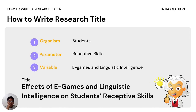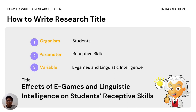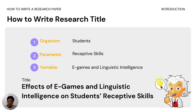Here is an example. When you write your research title, identify these three things first. Your organism — for example, students. The parameter — the receptive skills. And the variable — e-games and linguistic intelligence. So, the title would be: 'Effects of E-games and Linguistic Intelligence on Students' Receptive Skills.' This is an example of a properly structured research title.